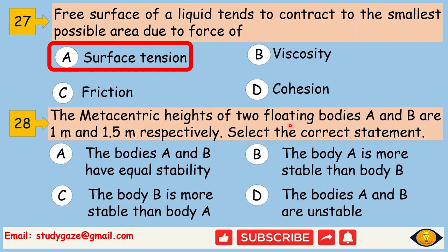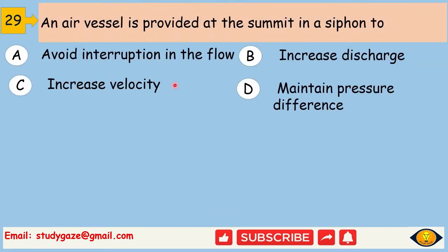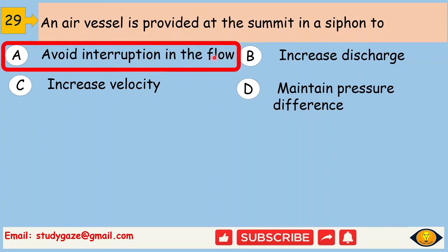A metacentric height of two floating bodies A and B are 1 meter and 1.5 meter respectively. The body B is more stable than body A. An air vessel is provided at the summit in a siphon to avoid interruption in the flow.